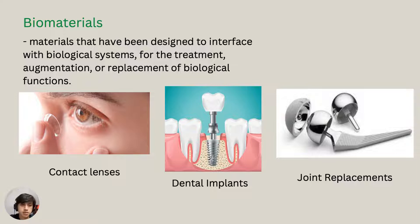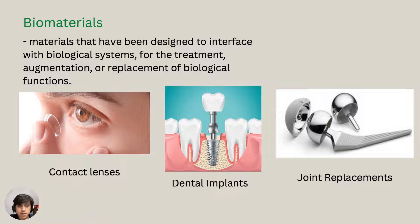Biomaterials are materials designed to interface with biological systems for the treatment, augmentation, or replacement of biological function. This is also a category of advanced materials. Examples include contact lenses, dental implants, and joint replacements — used when there is a bone fracture that needs to be replaced by these advanced materials.